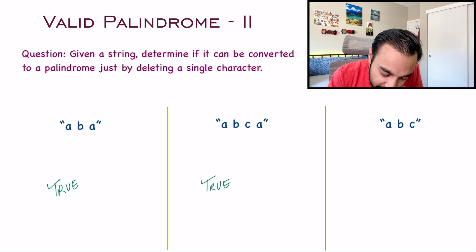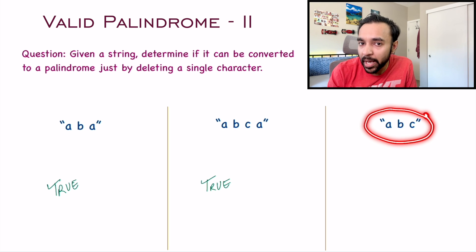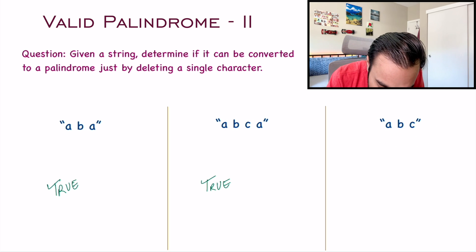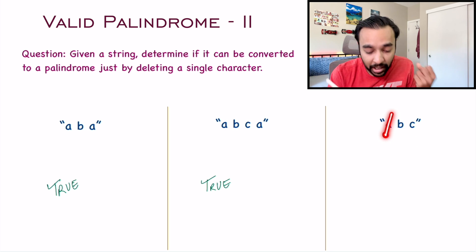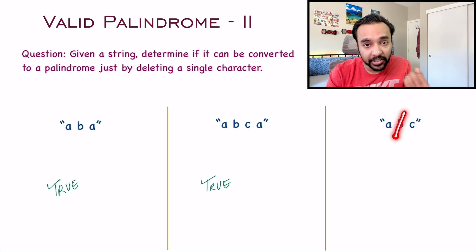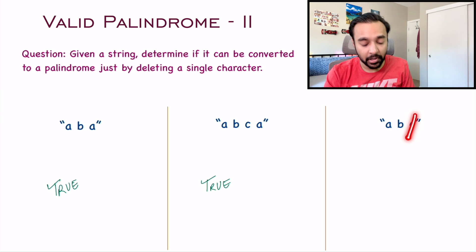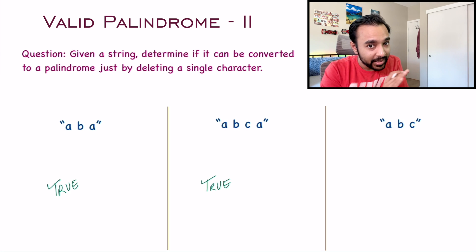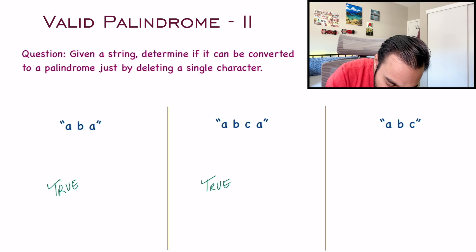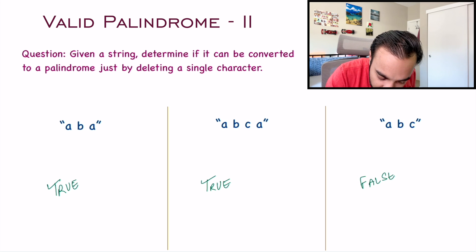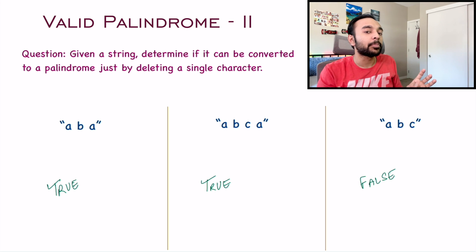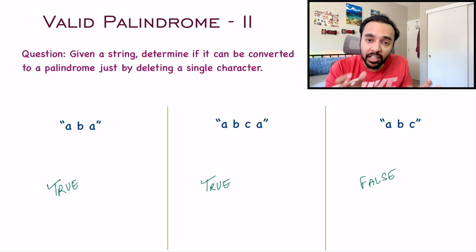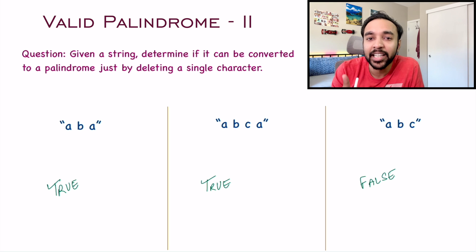Looking at our third test case, I have the string "abc". This is not a palindrome. So how can you convert it? You see that even if you delete any character, it's still not a palindrome. If you delete a, not a palindrome. If you delete b, not a palindrome. If you delete c, not a palindrome. So this string cannot be converted. For this third test case, you are going to return false. You just have to tell me true or false if you can convert the given string to a palindrome just by deleting a single character. You do not have to tell me which character to delete.